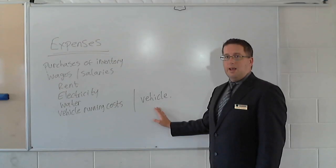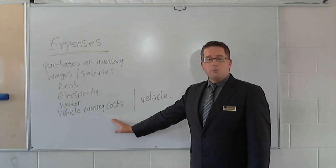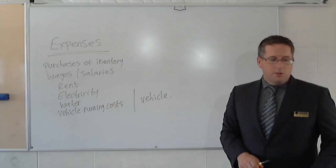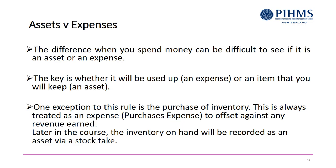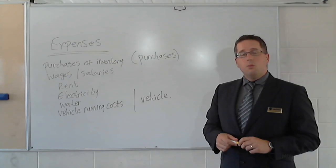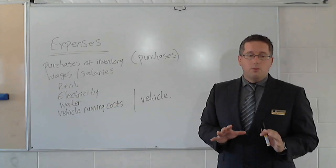Now let's contrast that with an asset. For example, the purchase of a vehicle — a vehicle stays for a long time, maybe a few years. You're going to have this vehicle and get ongoing benefit from it, so that's recorded as an asset. But there are expenses related to that asset: petrol, registration, servicing, and insurance — those all need to be paid regularly. The purchase of the actual vehicle, however, we record as an asset. One exception is the purchase of inventory.